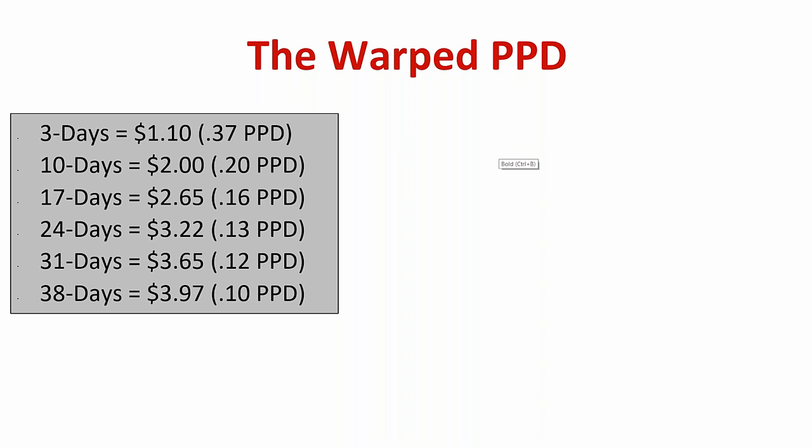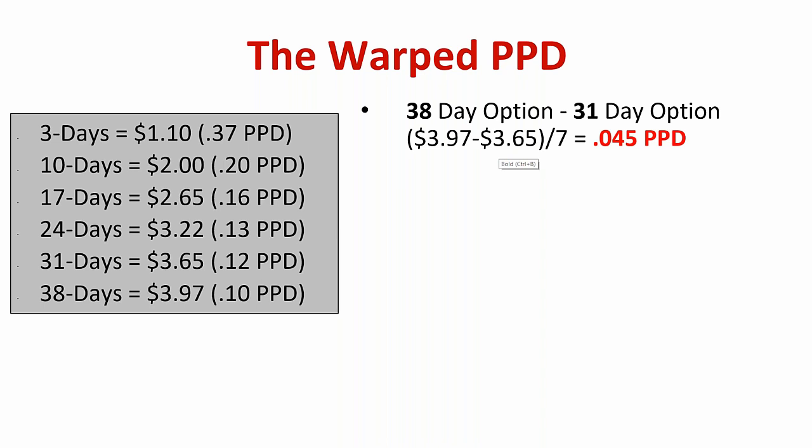The formula is to exit essentially when the short option expires. So if I sell a three-day option and buy a 38-day option and exit both in three days, if the market goes nowhere, that 38-day option will not have dropped by $0.10 a day — it will have dropped by something less. The difference between the 38-day option and the 31-day option is only about a $0.045 per day difference. The 38-day option at $3.97 in one week would only have dropped to about $3.65.